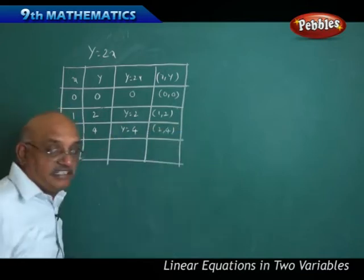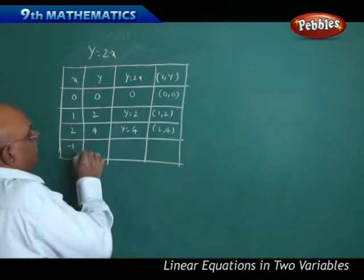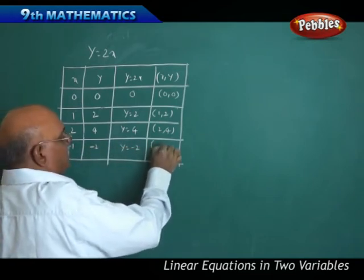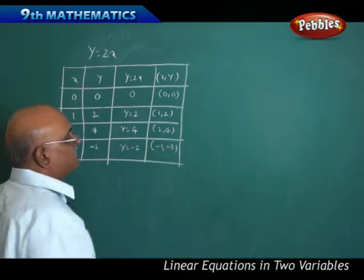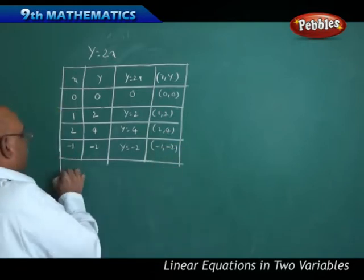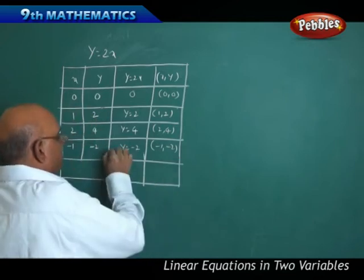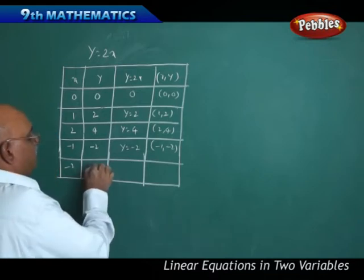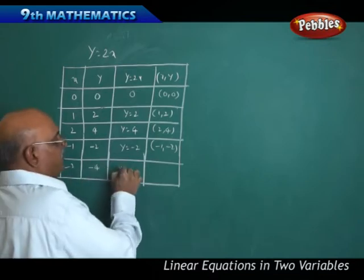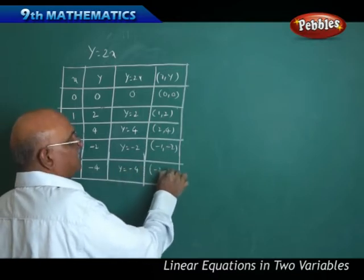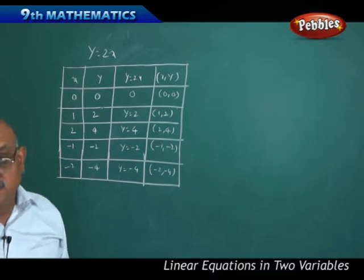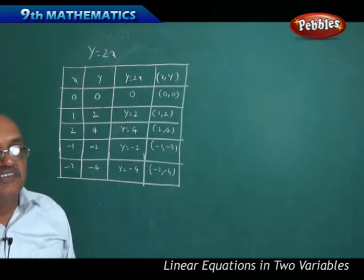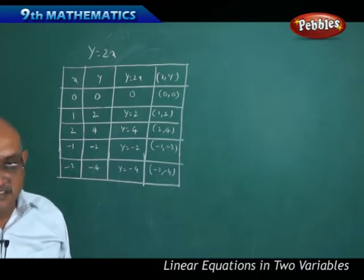If I take the negative value, that is x is minus 1, naturally y will be minus 2. Therefore, the point is minus 1 comma minus 2. Similarly, if x is minus 2, naturally y will be minus 4. Therefore, the point is minus 2 comma minus 4. We will see this graphically and then generalize the equation and see what properties it has.